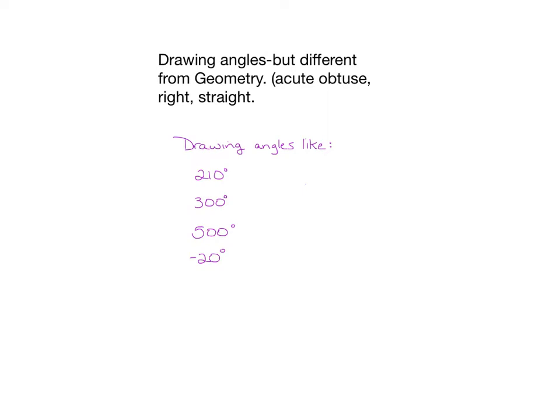In geometry, you had acute, obtuse, right, and straight angles. Our angles for this chapter are going to be drawn in the XY plane, and they're going to be really large. We might be drawing an angle that's 210 degrees, 300 degrees, 500, or even negative degrees. They're going to look like concentric circles — like bullseyes. We're going to be swirling around to create these graphs.